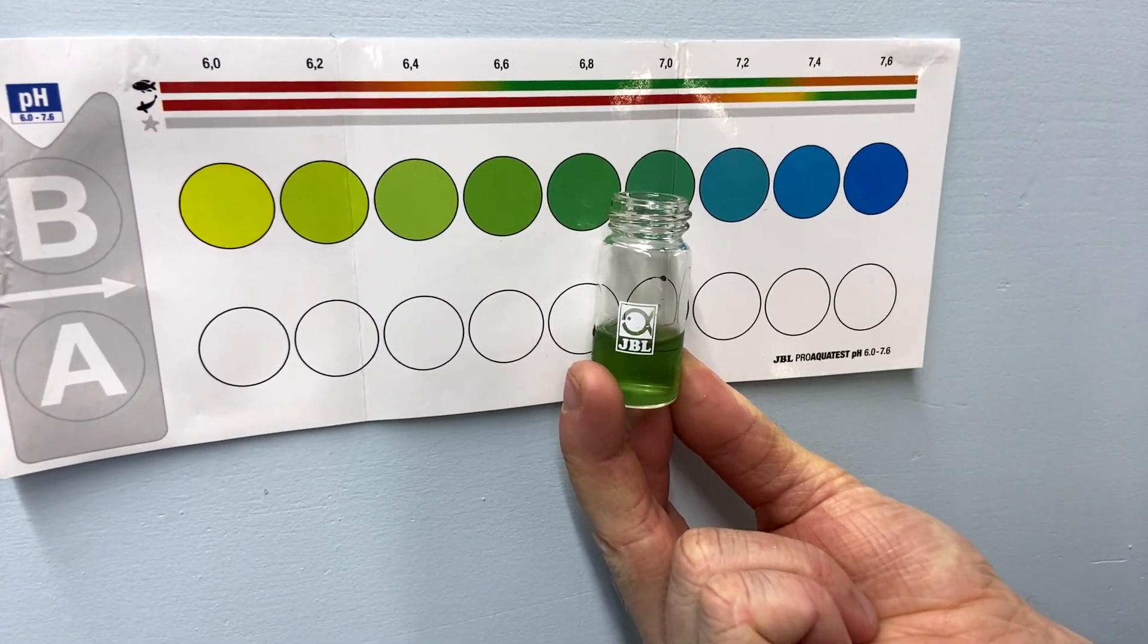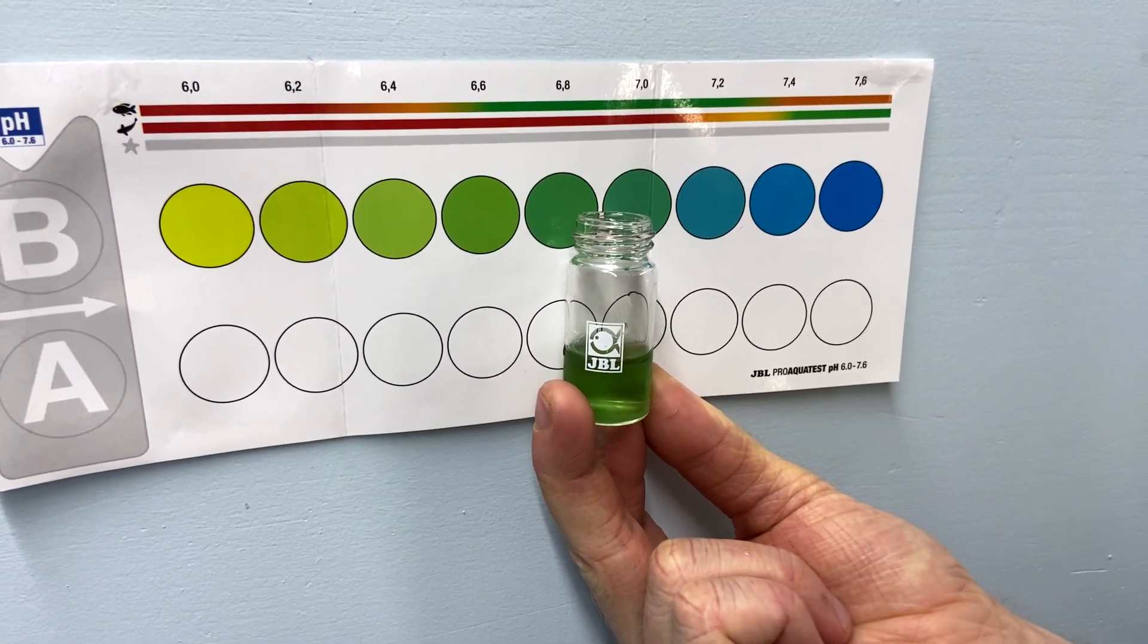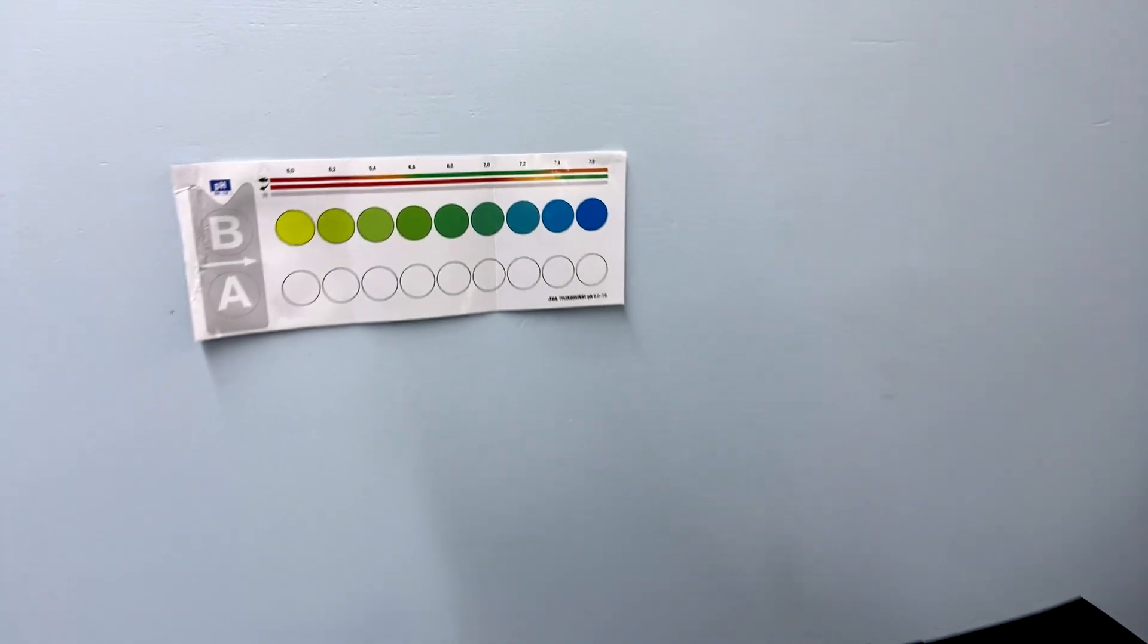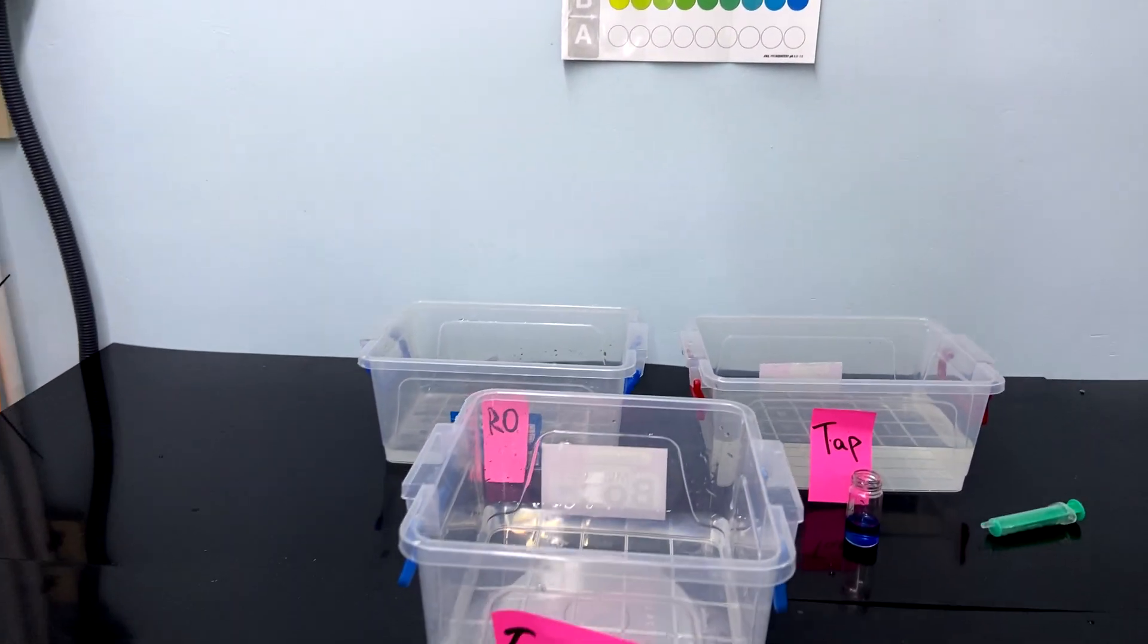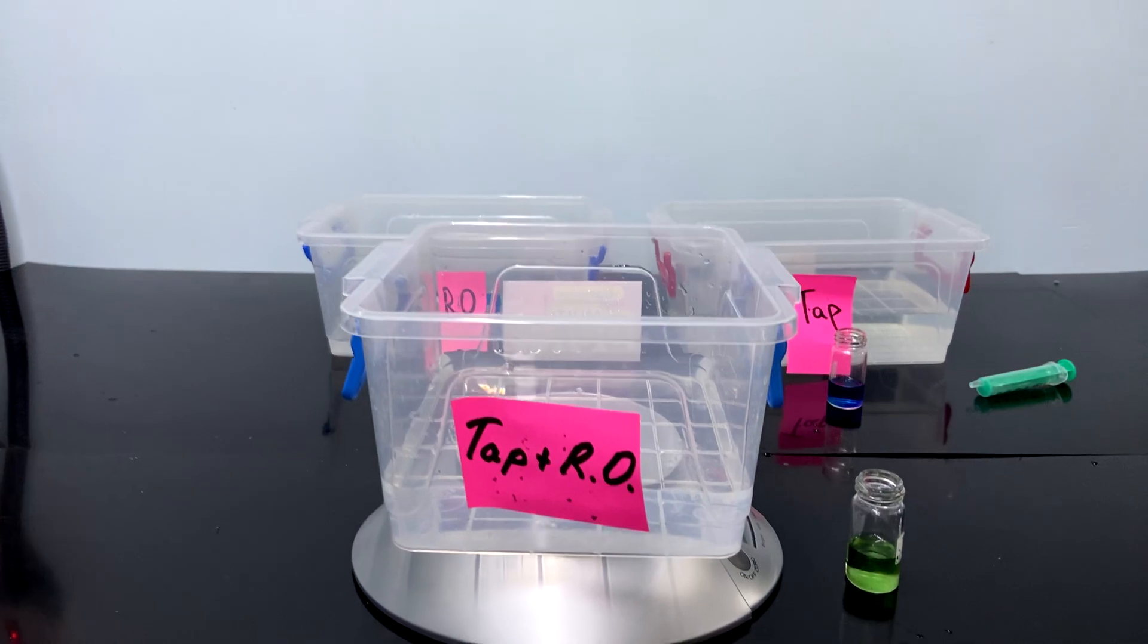So now pH is 7. You can see it. It's appropriate for keeping and breeding L46. You can use such water for water changes in your tanks. As you can see, it's easy.